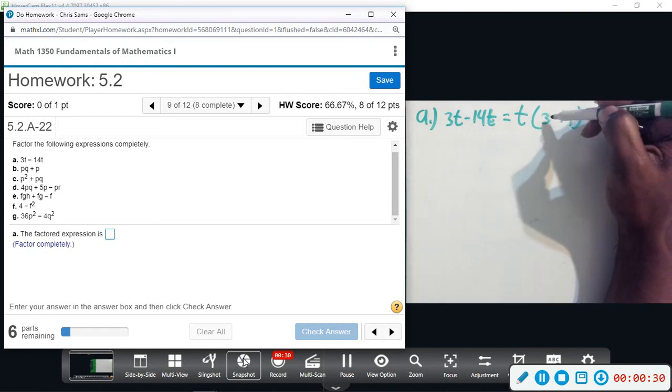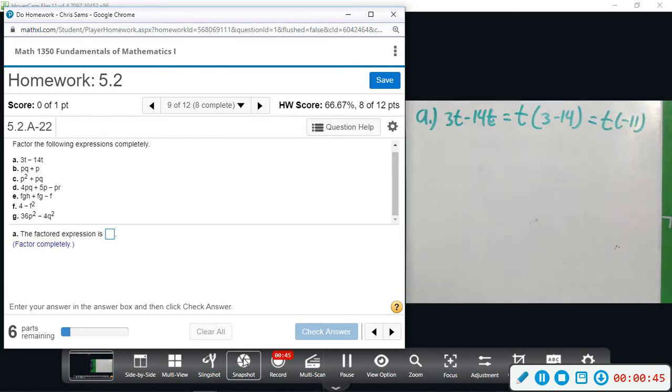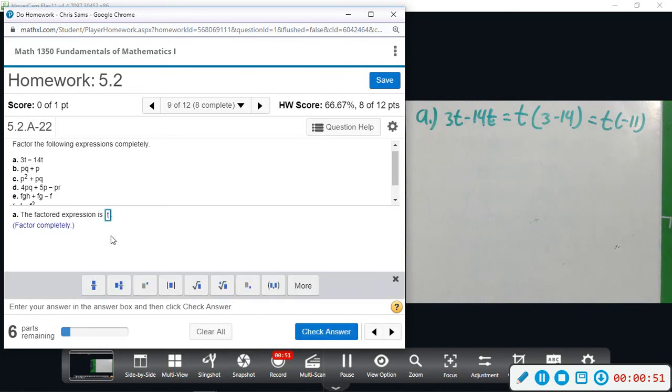And I mean we can simplify, I think they want us to simplify all the way down. We could write this as t times negative 11. So let's go ahead with the simplified version: t times negative 11.